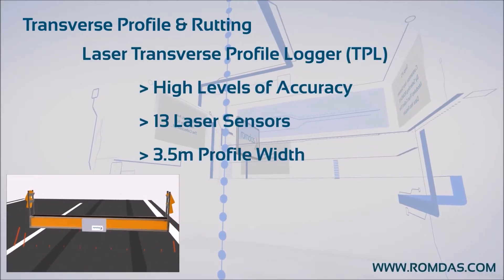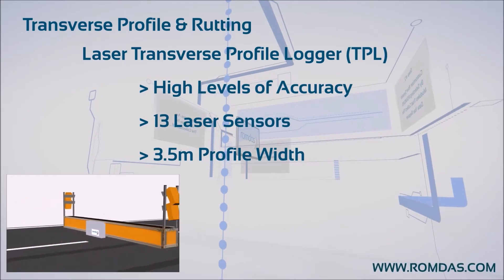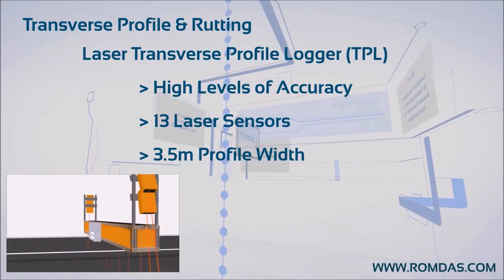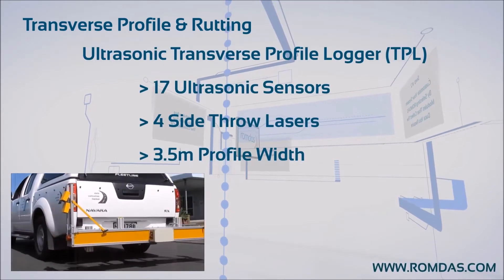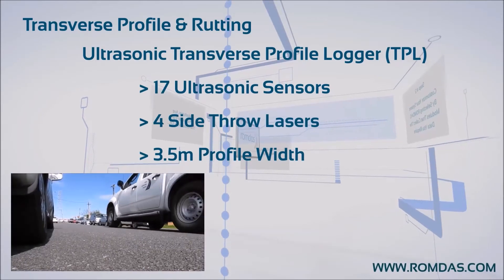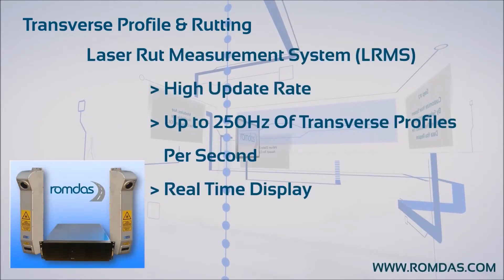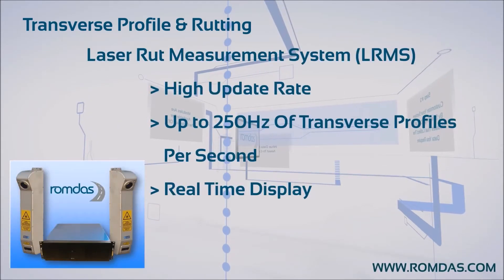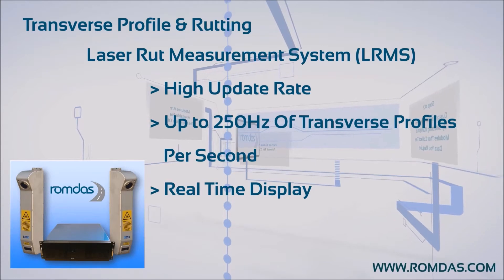ROMDIS has developed modules to collect the transverse profile of the road accurately and simply. Each module has a robust design and does not protrude beyond the width of the vehicle. These products range from high-end to low-cost, depending on your requirements.